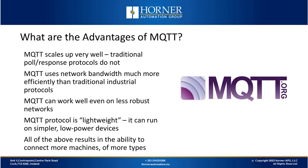MQTT can work even without a robust high-bandwidth network — for example, with a radio modem or at least some cellular connection. Another advantage of MQTT is that it's quite lightweight. It doesn't take a very sophisticated device to run or use it. It does usually involve Ethernet, so there's an Ethernet stack somewhere in the code, but it can be used in applications where the connected devices aren't the most sophisticated. The result is we can now connect more machines of different types to the same amount of bandwidth.